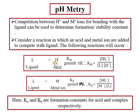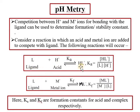H plus ions will compete with metal ions for the ligand. If we treat metal ion and ligand in the presence of acid, H plus ions also compete for the ligand. In this case, two products form: one is the acid (HL+) and the other is the metal complex. We look at the formation constant for both.